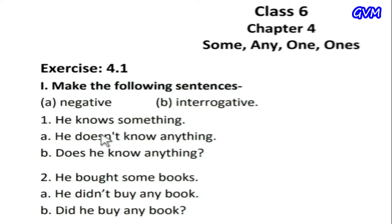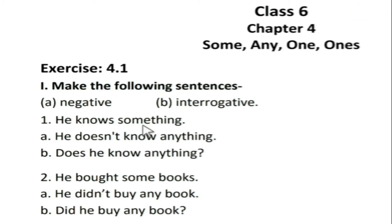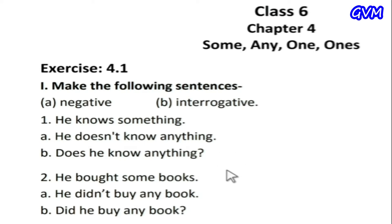Whenever he, she, it, or a person's name is included, we use 'does'. In the negative form: 'he doesn't know anything' — we convert 'something' into 'anything' in negative form. In interrogative: 'does he know anything?' and we add a question mark. Second sentence: 'he bought some books' — the correct answer is (a) 'he didn't buy any book'.